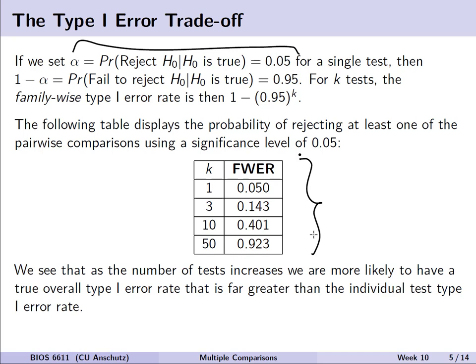For example, if we do three different tests, we have a 14.3% chance of at least one of them being incorrectly rejected. Or if we do 50 tests, there's an over 90% chance that at least one of our p-values will show up significantly less than alpha just by chance alone. This represents a challenge if we're designing a study, because if we plan to do 50 tests but only power ourselves for the k equals one case, we have this inflated chance of making a type 1 error across all 50 tests.